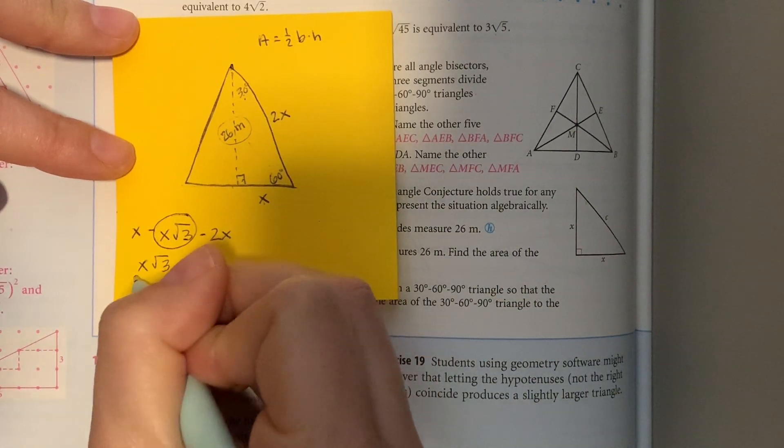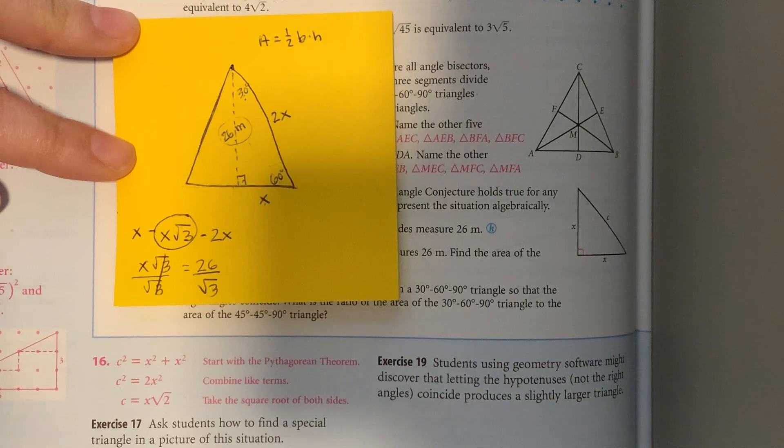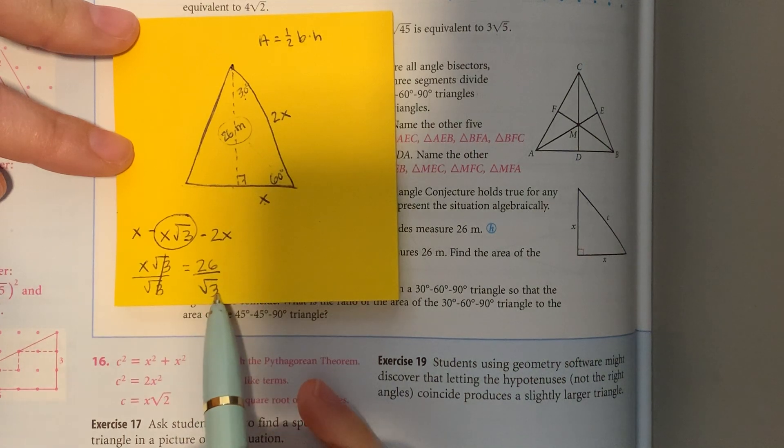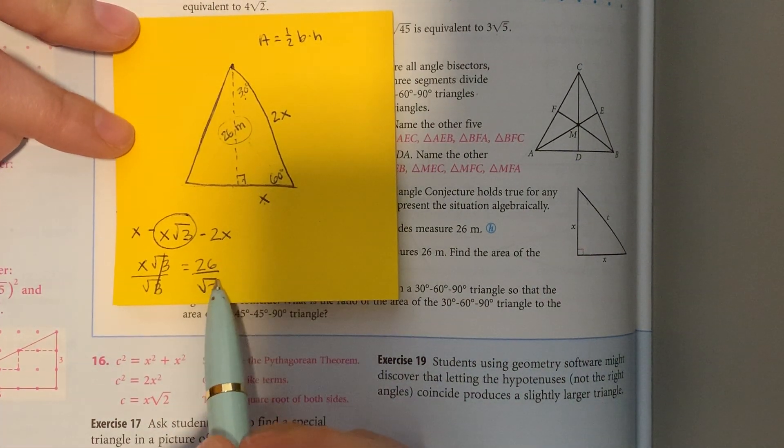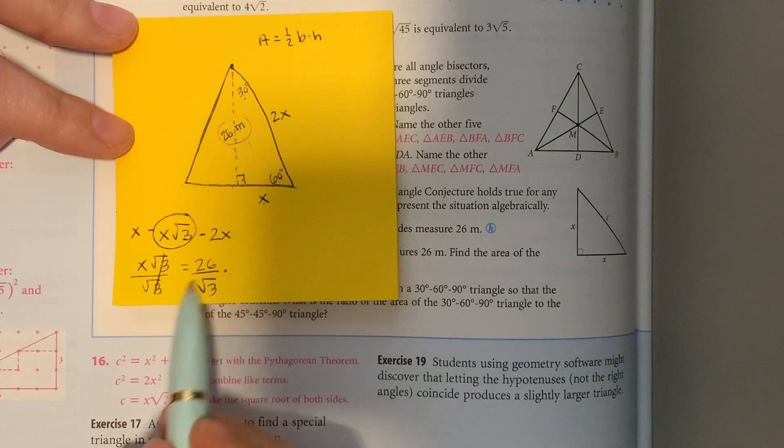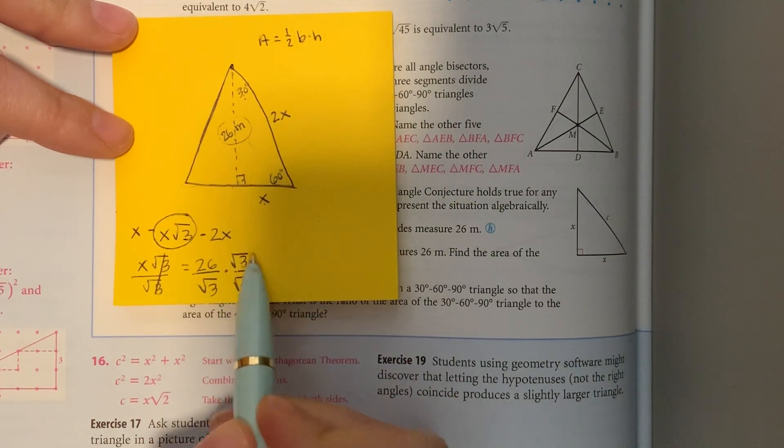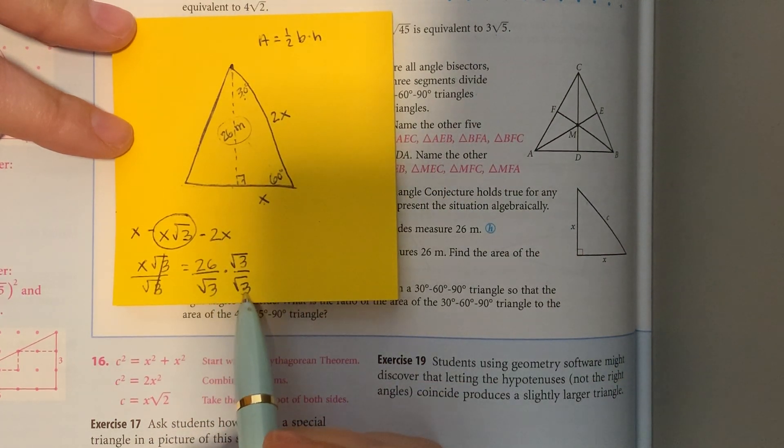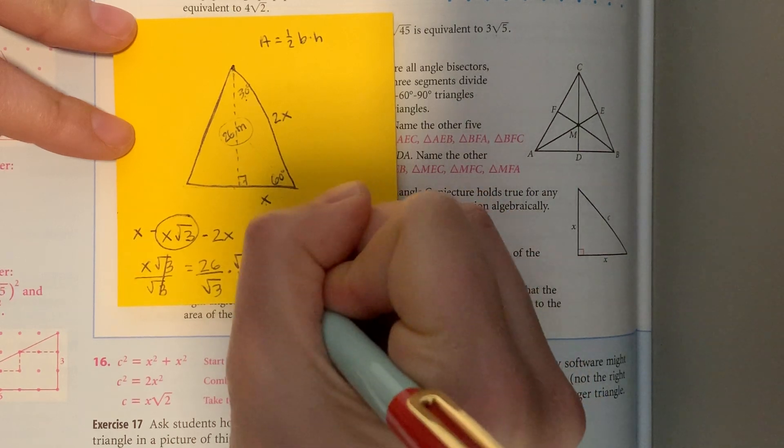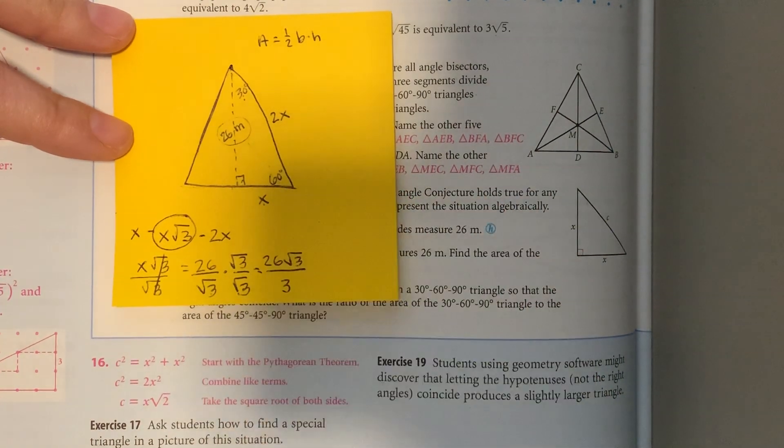I'll divide both sides by the square root of 3 to solve for x. So x equals 26 over the square root of 3. To rationalize the denominator, I'll multiply by square root of 3 over square root of 3, which equals 1, so I'm not changing the value, only the look. Multiplying across the top gives 26 square root of 3. Multiplying across the bottom gives square root of 3 times square root of 3, which equals the square root of 9, or 3.